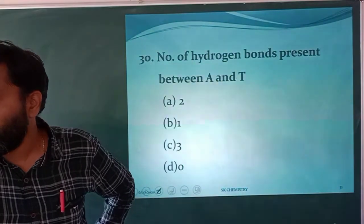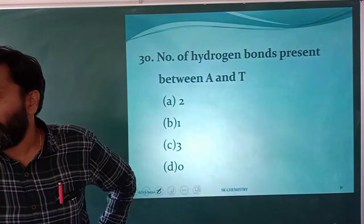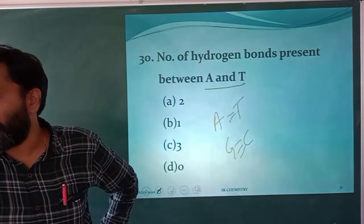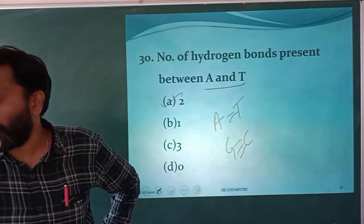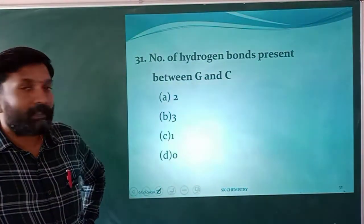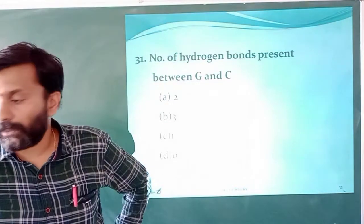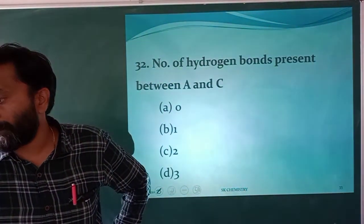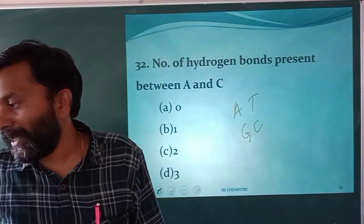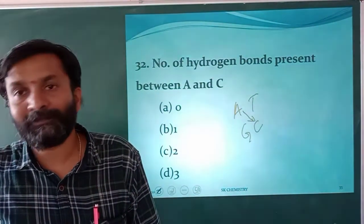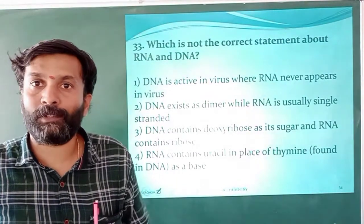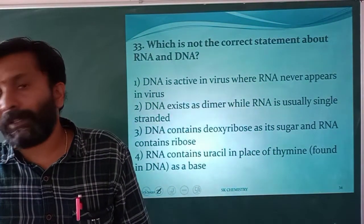Number of hydrogen bonds in A–T: adenine and thymine have 2 hydrogen bonds. Number of hydrogen bonds in G–C: guanine and cytosine have 3 hydrogen bonds ('girls college — triple bond'). Number of hydrogen bonds between A and C: since A and C do not pair, there are zero hydrogen bonds between them.